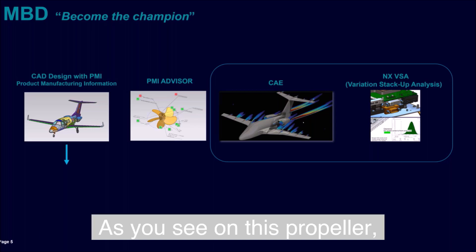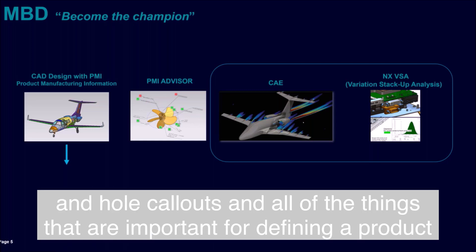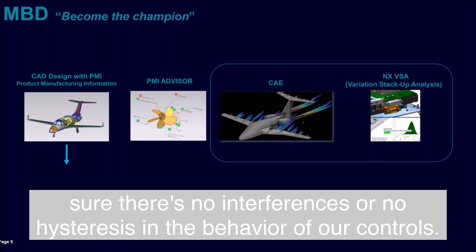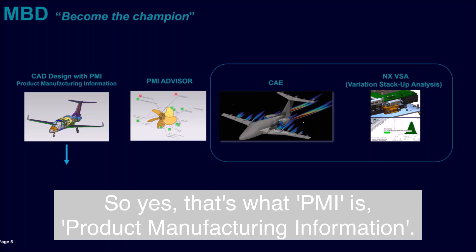PMI is Product Manufacturing Information. As you see on this propeller, there are dimensions, tolerances, tolerance frames, hole callouts, and all of the things that are important for defining a product — for our shop floor, for FEA analysts, and for engineers checking for interferences or hysteresis in the behavior of control surfaces, given an airplane example. That's what PMI is.